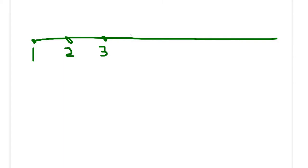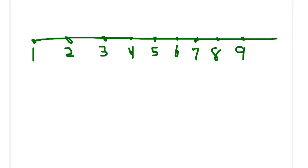We'll say when we start counting at 1, and 2, and 3. We'll give another number for 4, and 5. Here's 6. And there's 7. And here's 8. And 9. And finally, we'll stop this number line at 10.